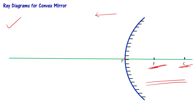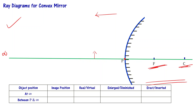Let me say that I have infinity — an object placed at an infinitely long distance from the pole — or I can place an object somewhat near to the pole. So these are the only two possibilities: the object position can be at infinity, meaning it is far away from the mirror, or in between the pole and infinity, meaning somewhat closer to the mirror. Depending upon the position of the object, we are going to see how it affects the image position, whether the image is real or virtual, enlarged or diminished, erect or inverted.